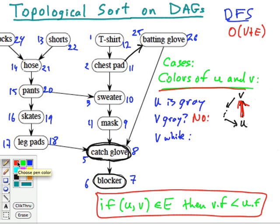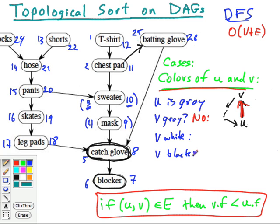Can V be white? Yes — that's the case where it's going to become a descendant of U. When we hit chest pad, sweater was white; when we hit sweater, mask was white. This is where the parentheses theorem applies: for example, 3 and 10 wrap around 4 and 9 in parentheses fashion, so U's finish time will be greater than V's finish time. The other case is V is black — meaning we've already finished V, so it already has a finish time, and we haven't finished U, so U's finish time will be later. In all cases this constraint is respected — therefore topological sort is correct.